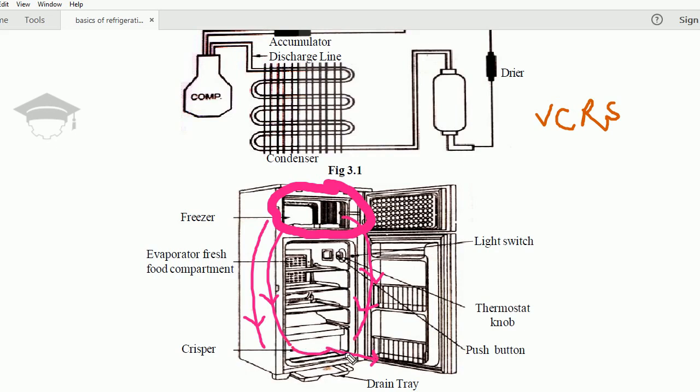Here is the defrost button which is shown by a push button. After some time of working, the evaporator coils get condensed—the water vapor in the air condenses near the vicinity of the freezer, so frost forms.